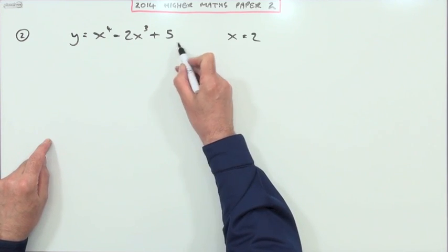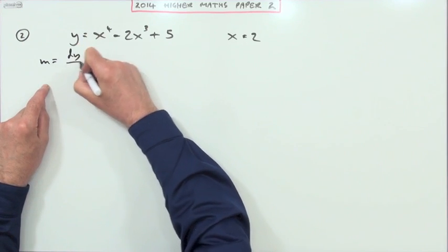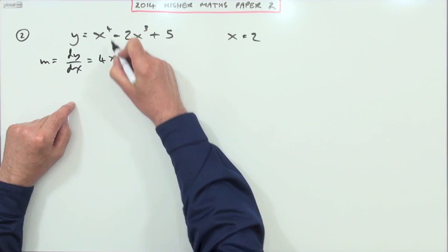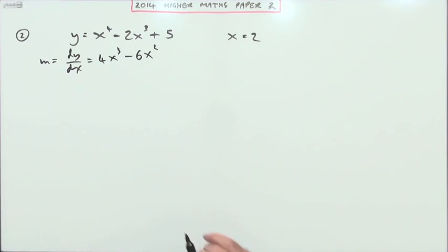Here's the coordinate equation. I'll need the gradient equation and that's given by the derivative. So multiply by the power, take one of the power. Multiply by the power to one of the power. And that constant term just disappears because it doesn't change.